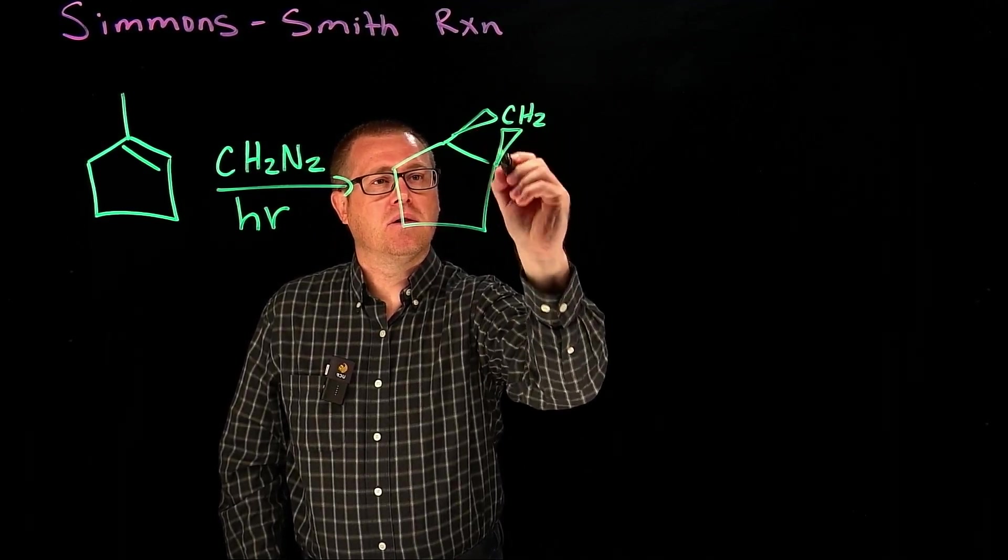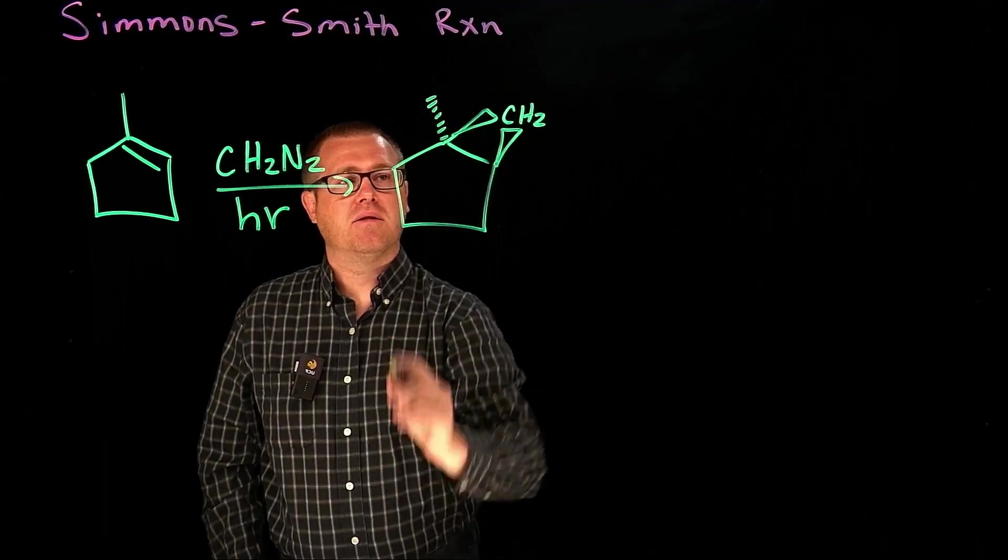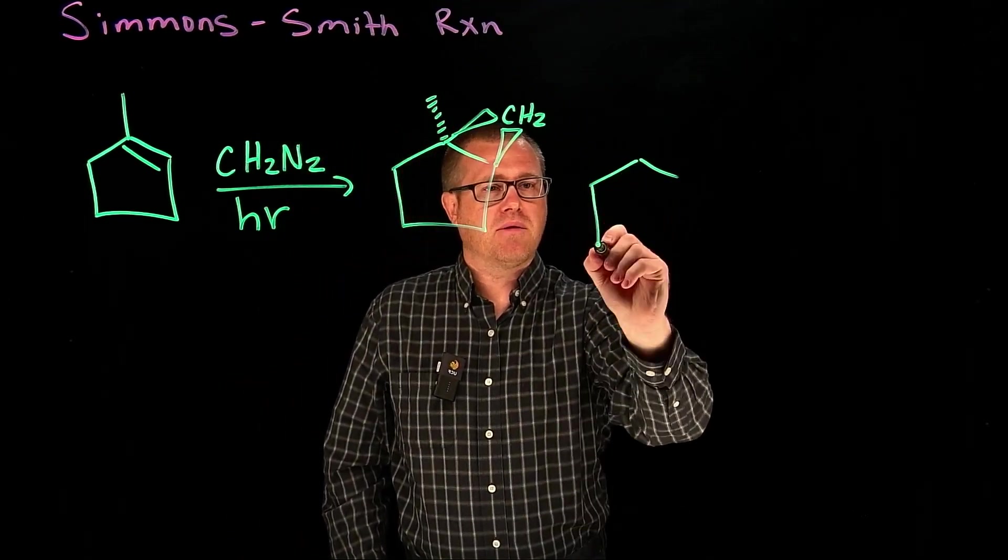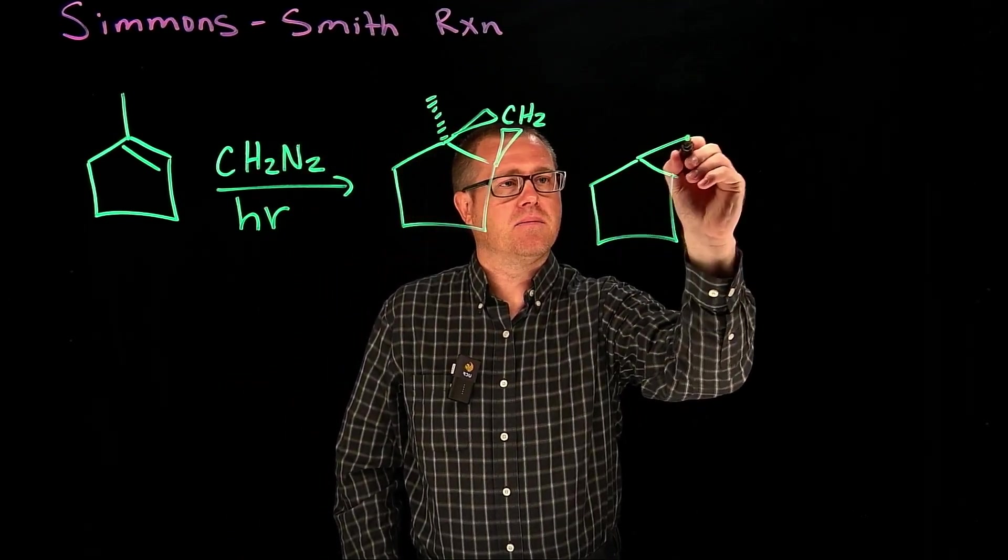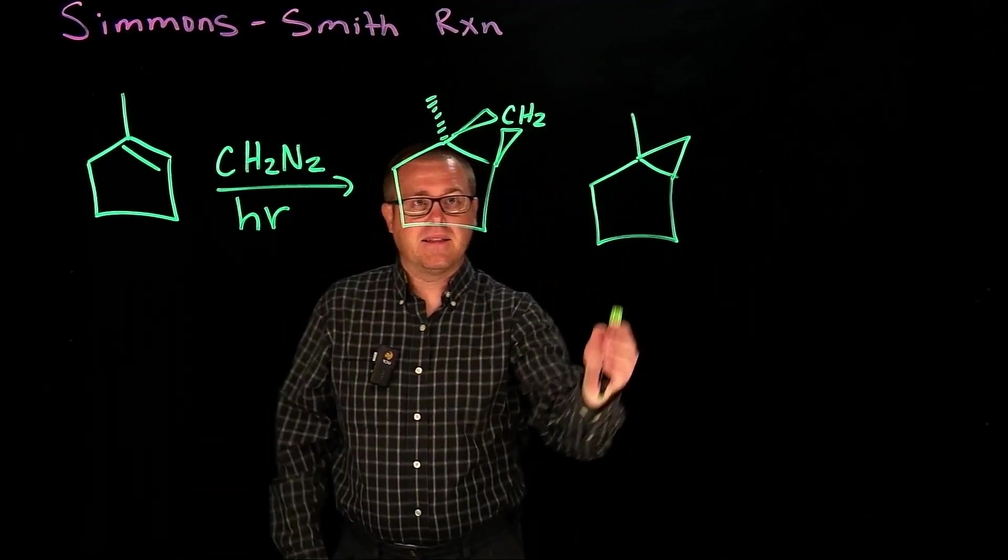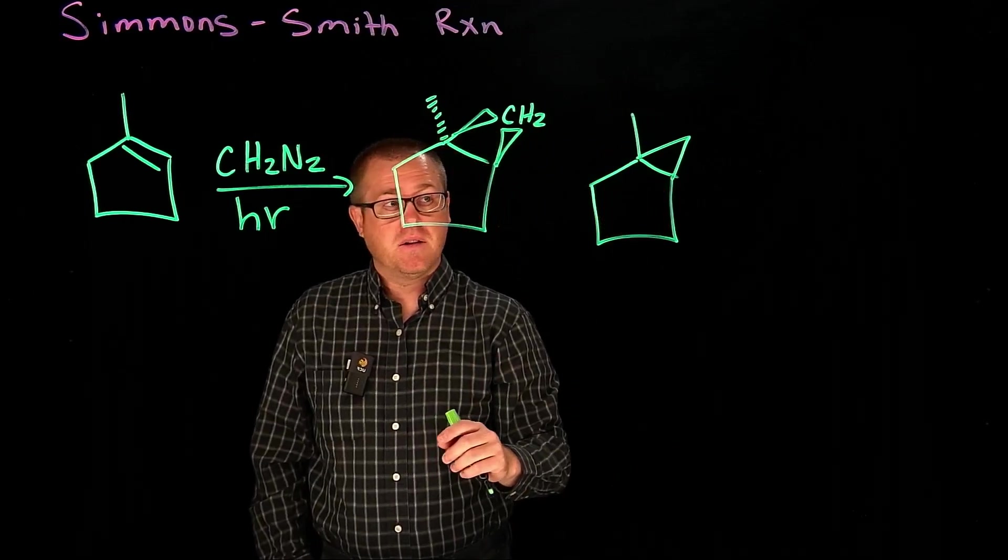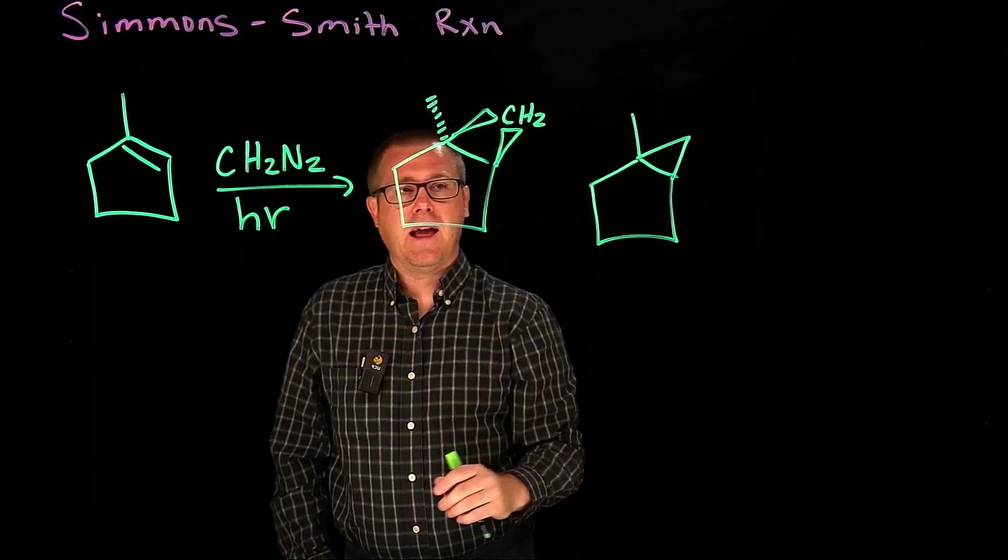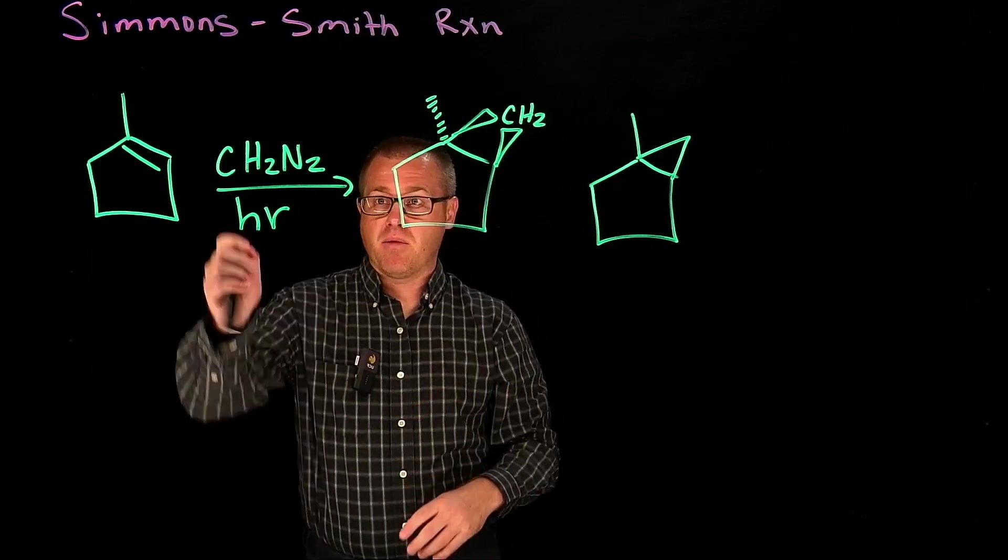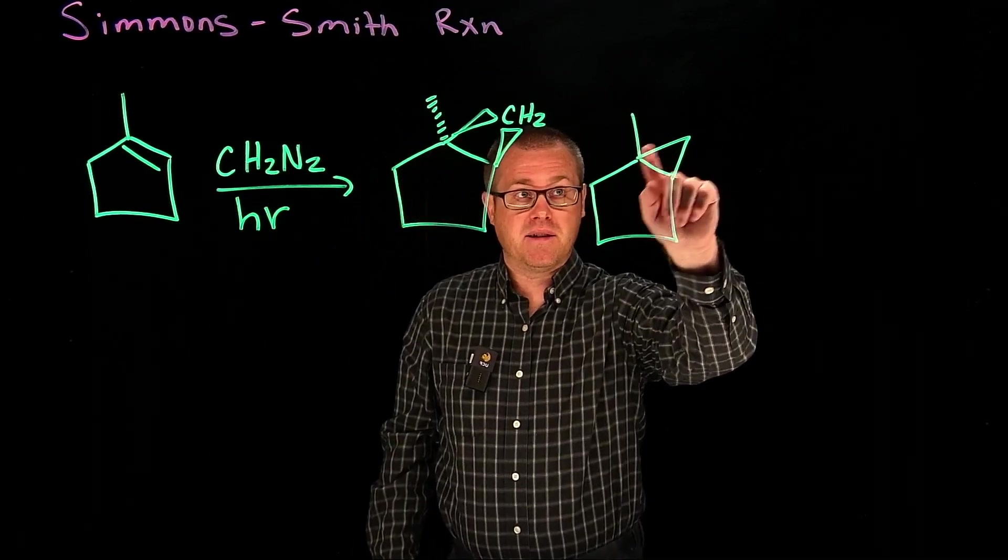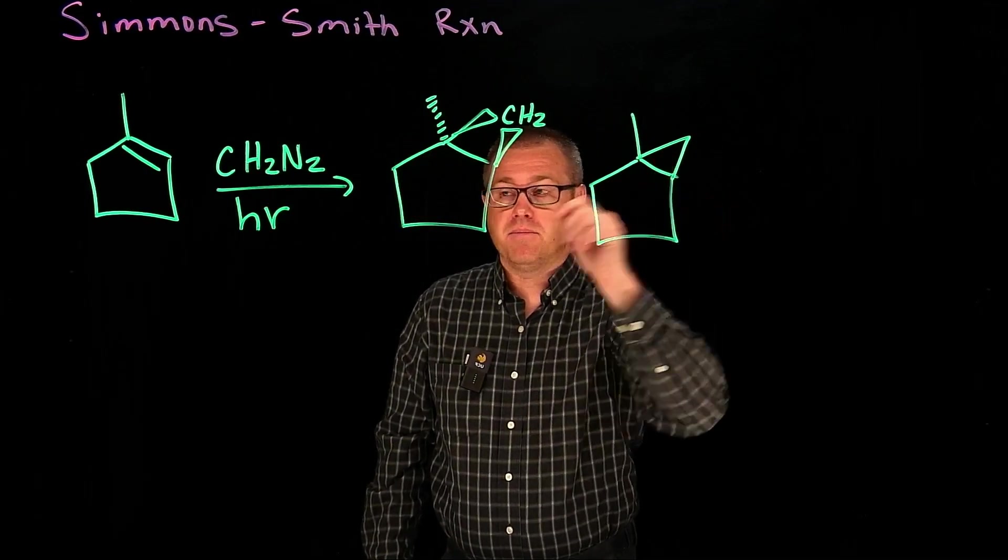CH2 and then our dashed methyl like that. You could also, you would probably also see it represented like this. But we realize that there's stereochemistry involved. This one's the most correct. But the main point that I'm trying to make here is, remember when we treated an alkene with diazomethane, we would generate the cyclopropane ring right here.